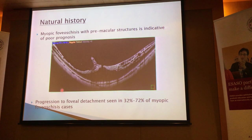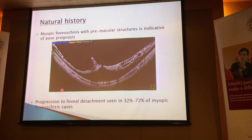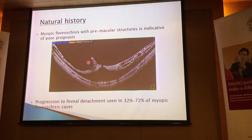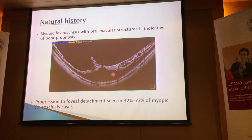The problem with myopic schisis is if you have pre-macular structures — traction in the pre-macular area — which is usually an indication of very poor prognosis. A lot of these cases actually go on to develop a foveal detachment, and it can happen in anywhere between 30–72% of these myopic schisis cases, depending on how myopic they are. You can see in this case a significant traction pulling into the vitreous cavity causing the schisis, and already a macular hole is opening up.